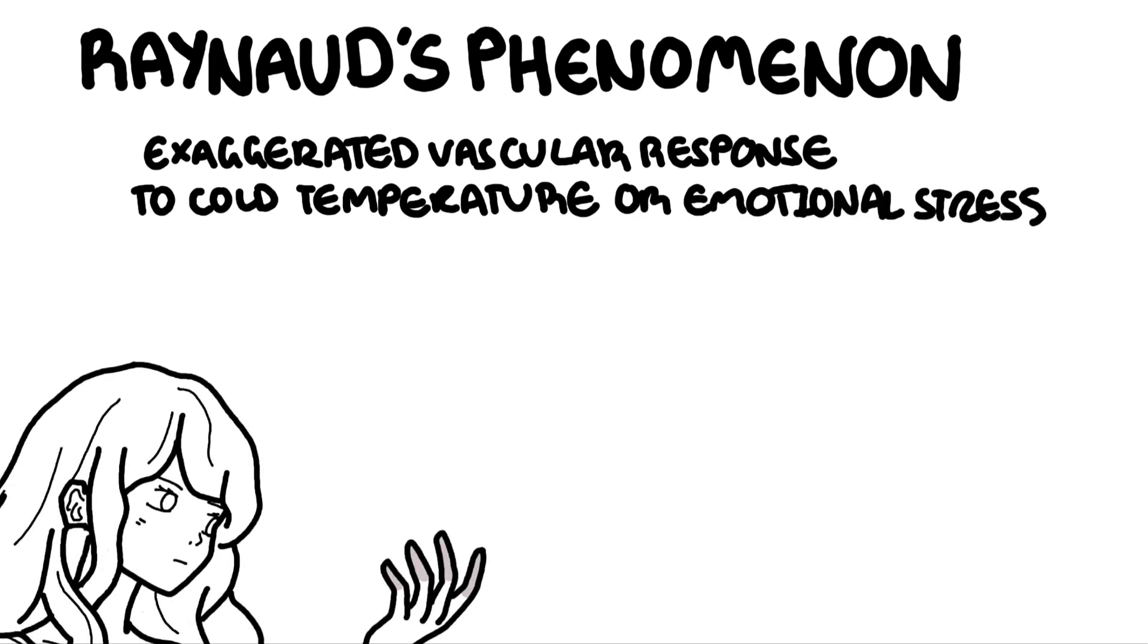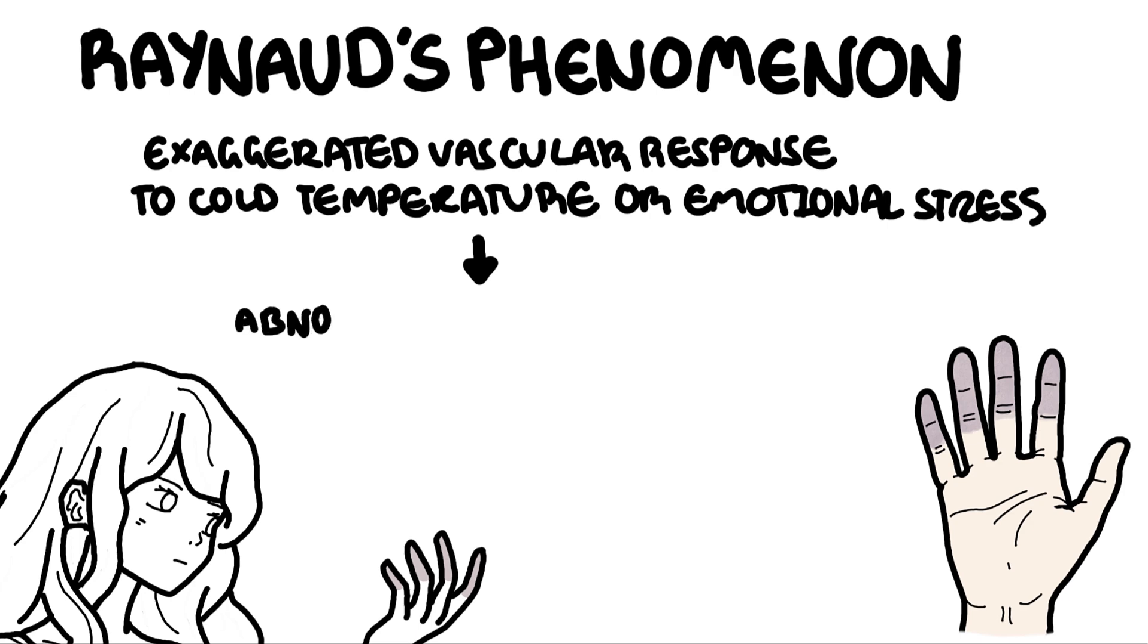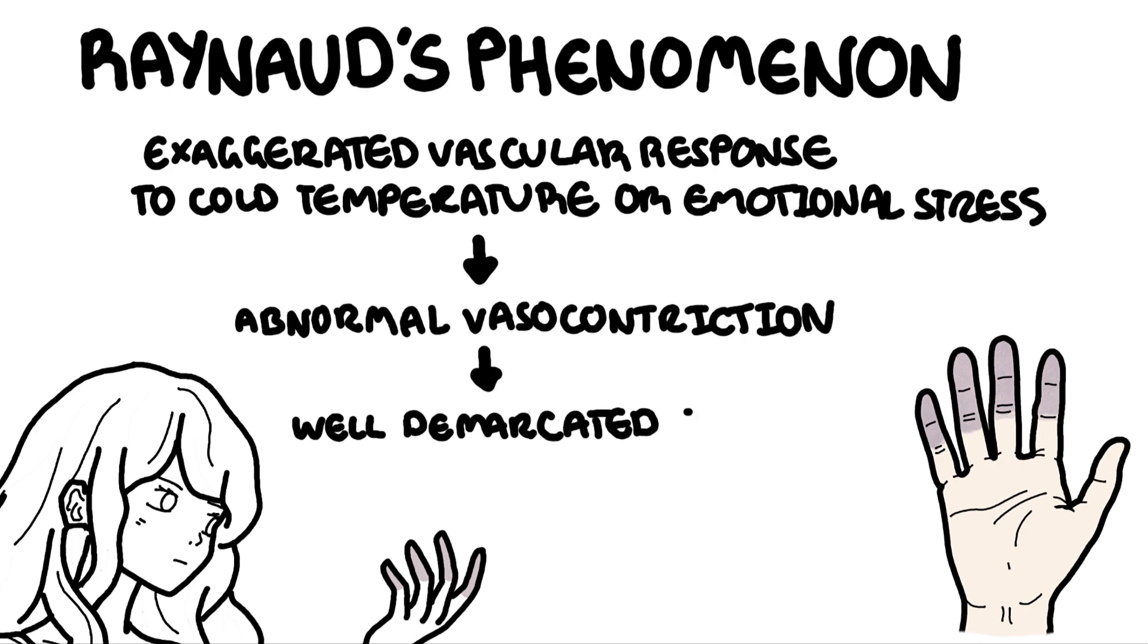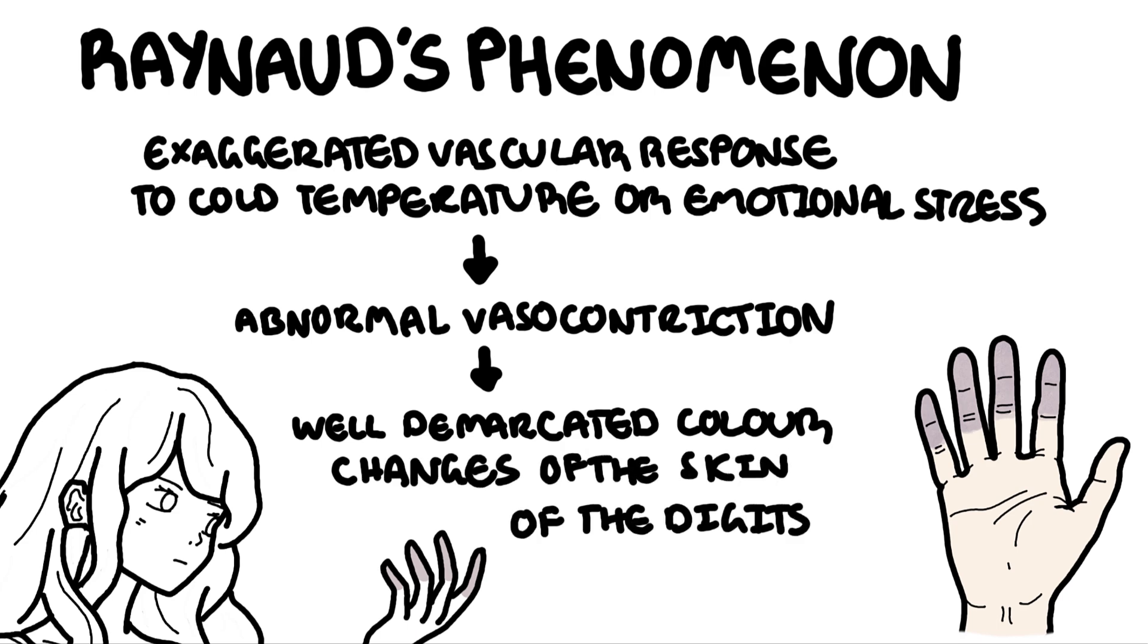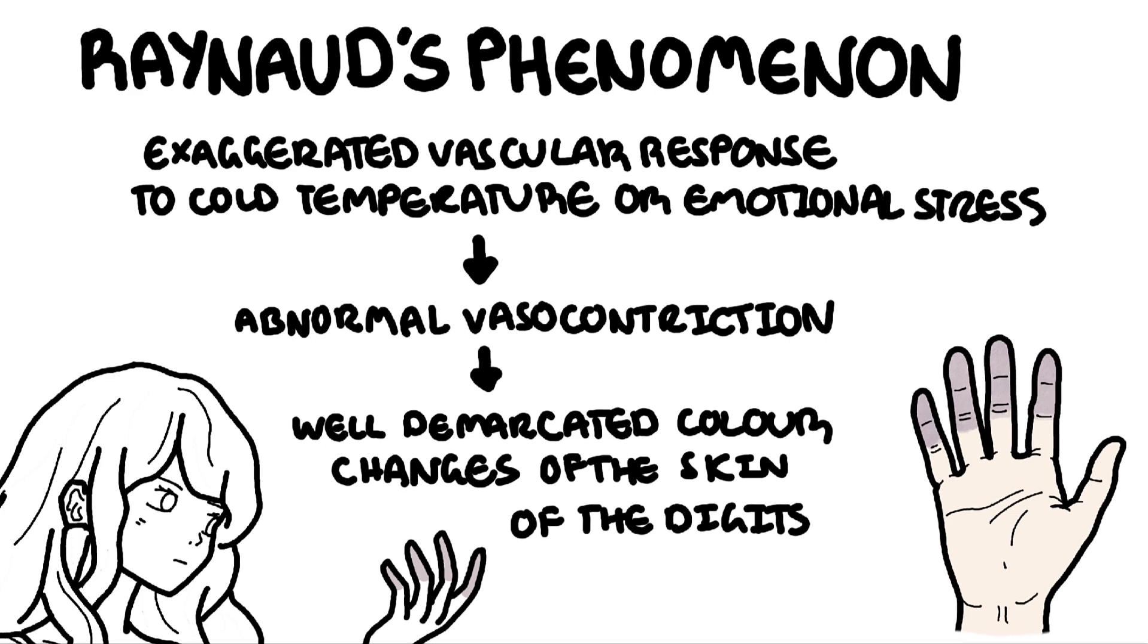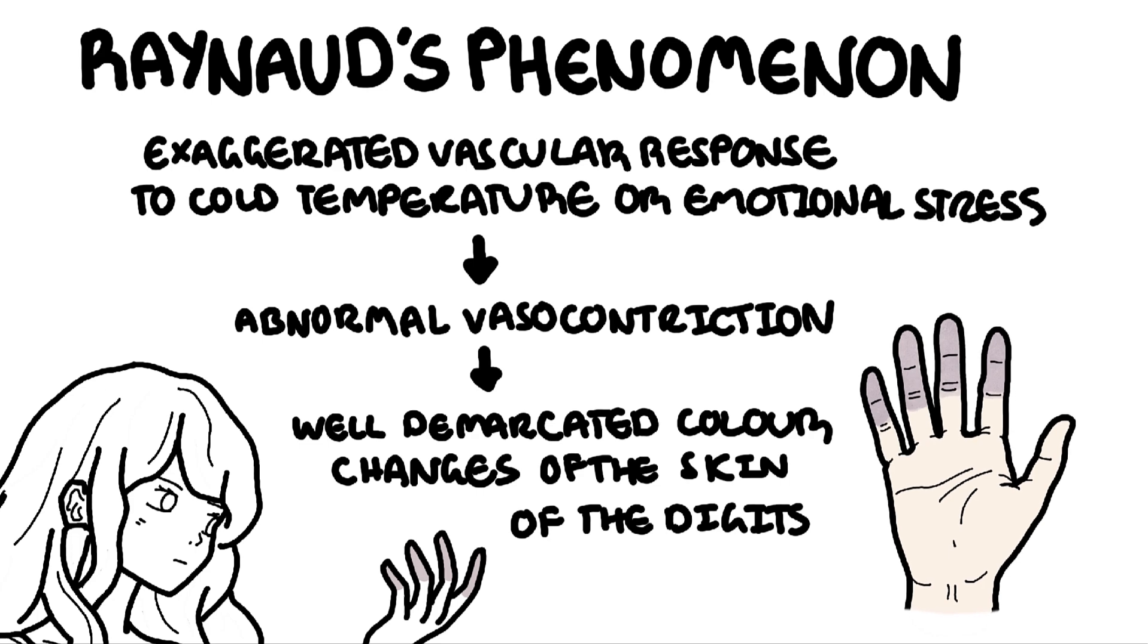It results in episodic abnormal vasospasm or vasoconstriction causing a well-demarcated color change in the skin of the digits, primarily the fingers or even the toes. Here's an example of a well-demarcated discoloration involving multiple fingers of the hand.